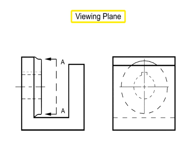A viewing plane line is a line that indicates a special type of detail view. A viewing plane line is very similar to a cutting plane line, but it does not actually cut the part, or generate a section.